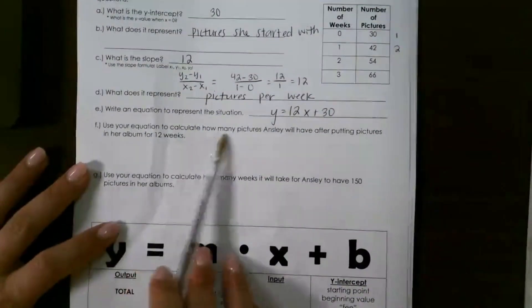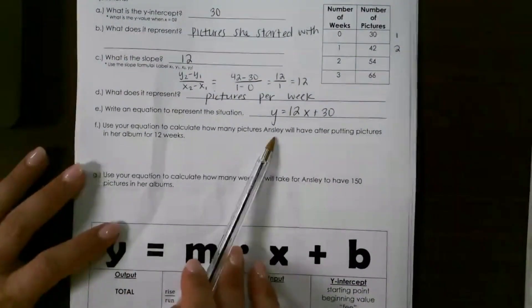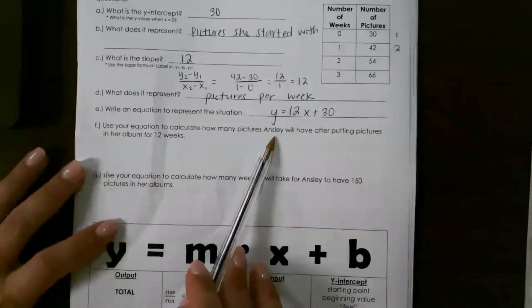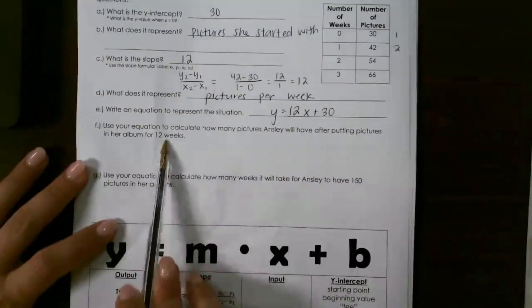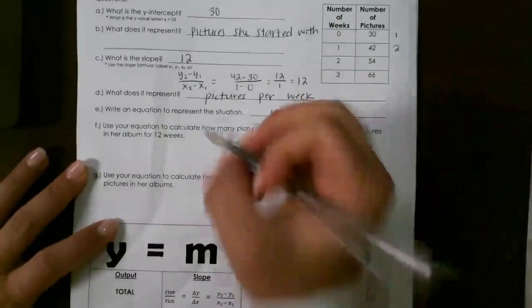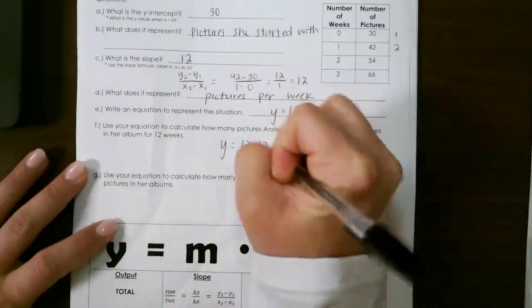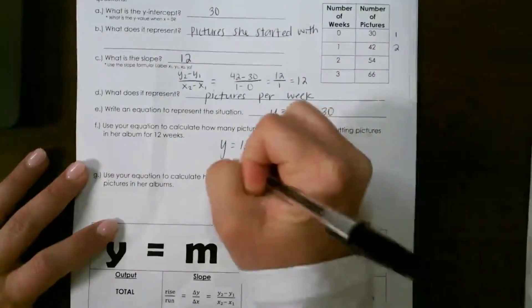Next, we want to use our equation to calculate how many pictures Ainsley will have after putting pictures in her album for 12 weeks. So if we're looking at weeks, that's our x value, so I'm going to replace x with 12 and solve.